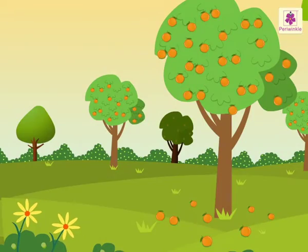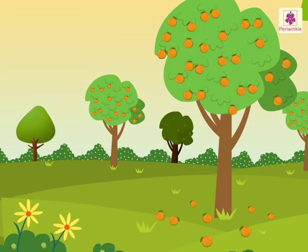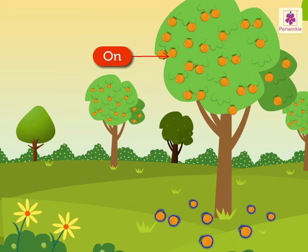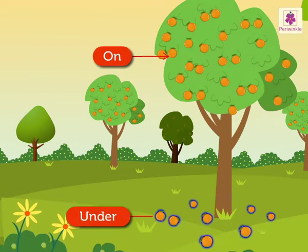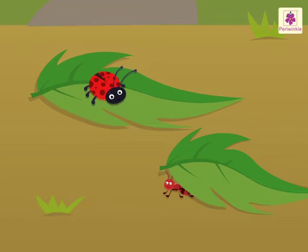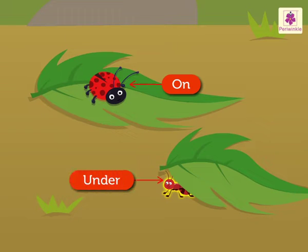Next is on and under. Look at these yummy oranges. So many of them are on the tree, and few of them have fallen down. So, we say the fallen ones are under the tree. Hey, look at the beetle. It is on the leaf. Can you see the tiny ant? It is under the leaf.